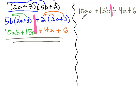On the left side, we see there's a common factor of 5b. When we factor out the 5b, we see we're left with 2a plus 3.